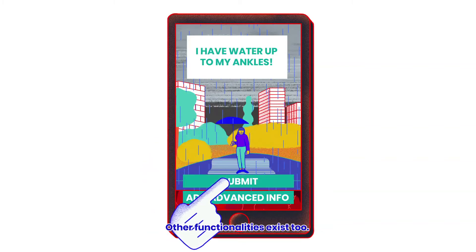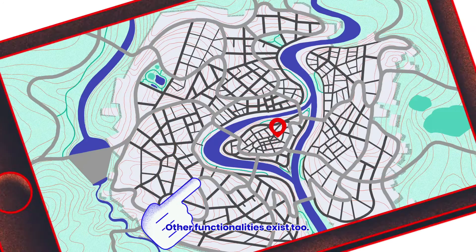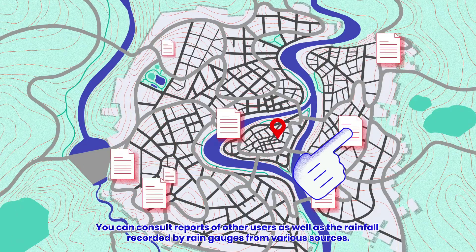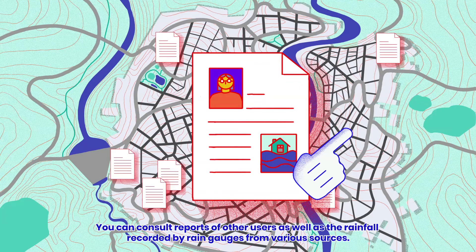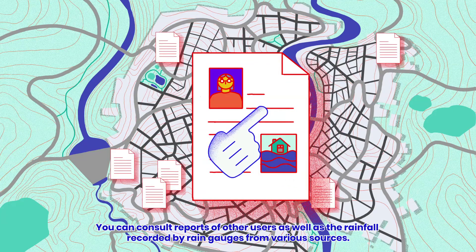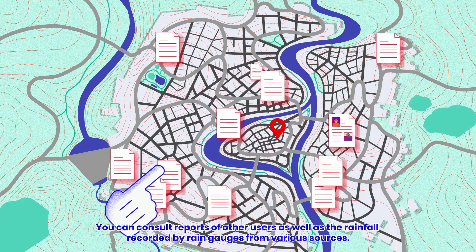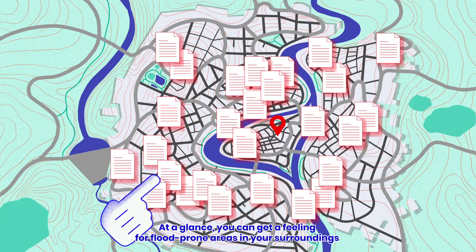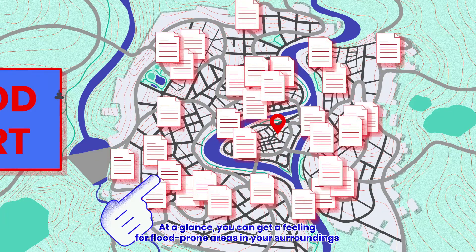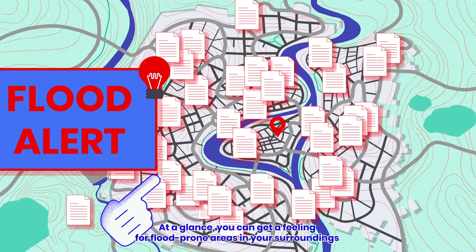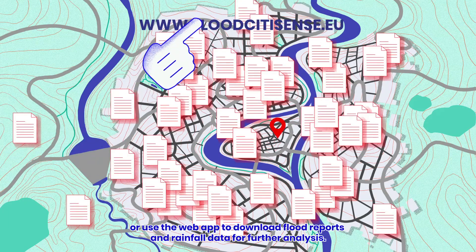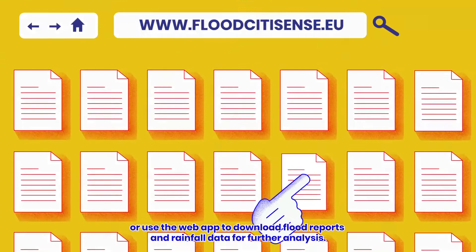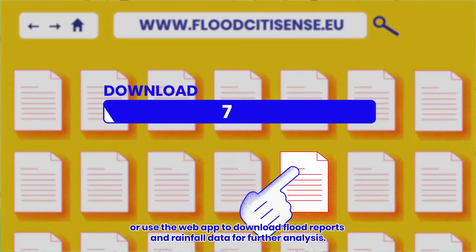Other functionalities exist, too. You can consult reports of other users, as well as the rainfall recorded by rain gauges from various sources. At a glance, you can get a feeling for flood-prone areas in your surroundings.